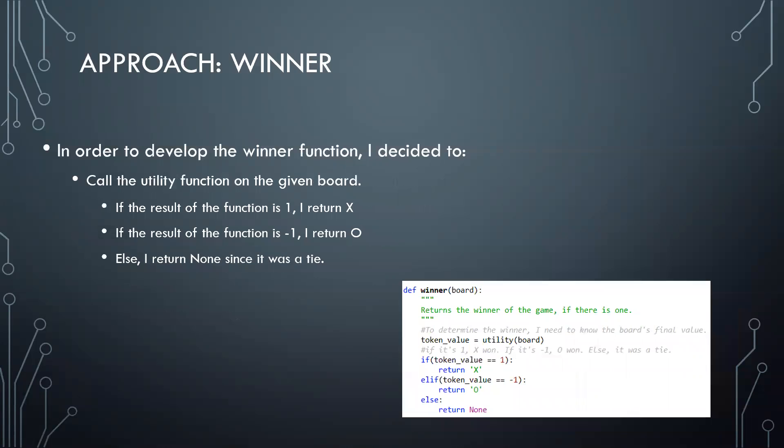The winner's function. I call the utility function on the given board. And depending on the result, I determine if it's X, O, or if it was a tie. So if the result of the utility is one, I say that X won. If the result of the utility function is minus one, O won. And otherwise, I return none because it was a tie.